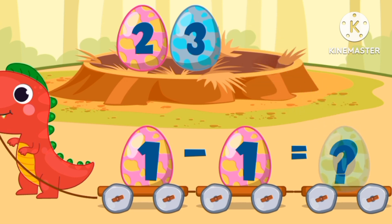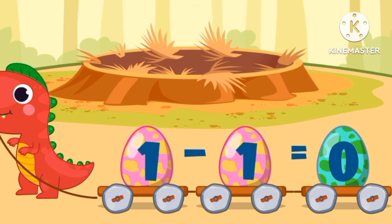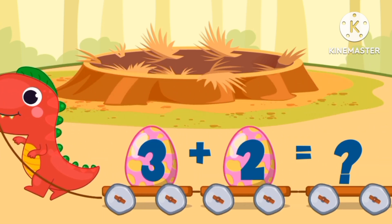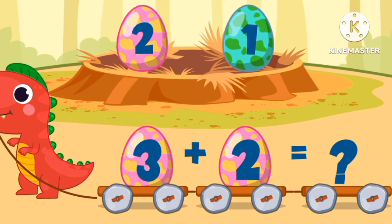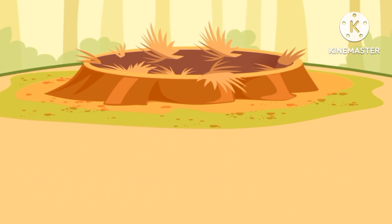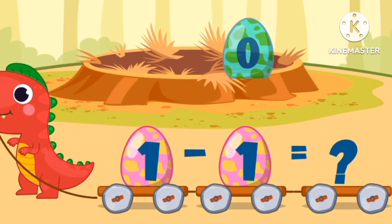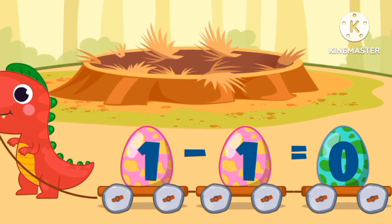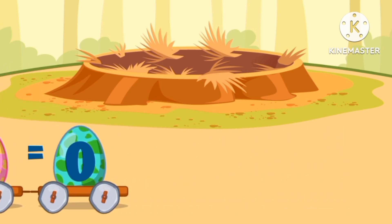Let's count the eggs. One minus one equals zero. What's three plus two? Is it number two or five? Five. Three plus two equals five. Now what's one minus one? Zero, one, or number four? It's zero. One minus one equals zero.